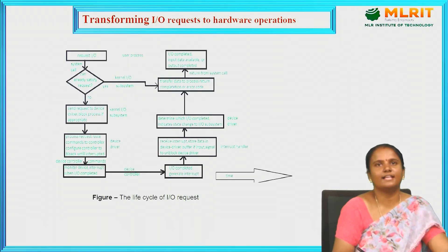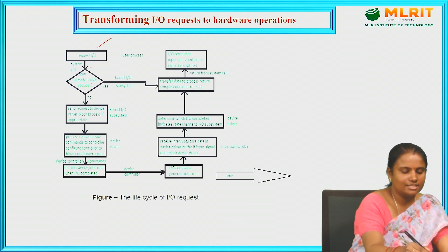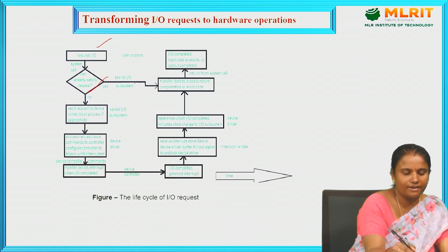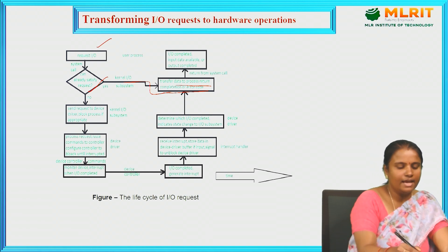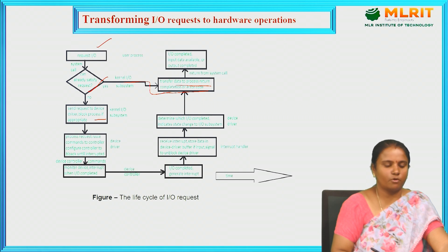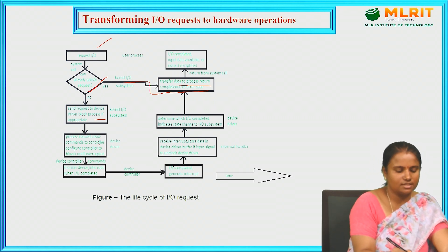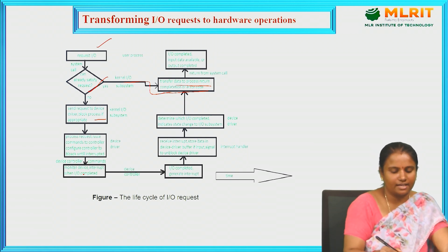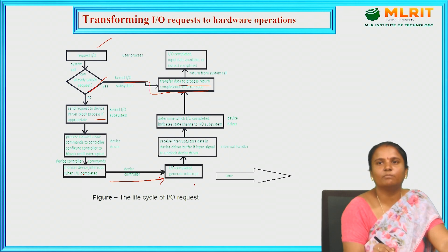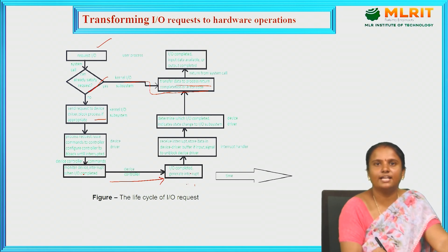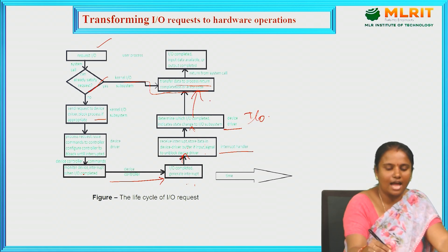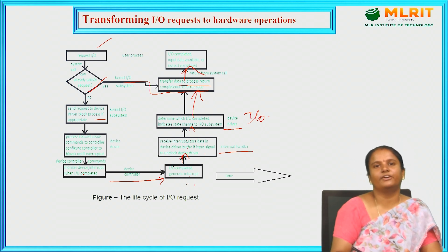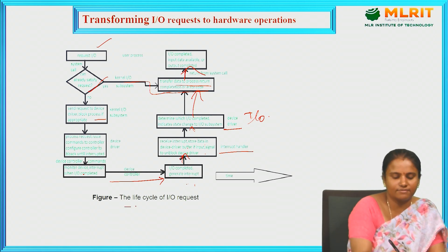This is how we transform an input-output request. The input-output system call checks if the request can already be satisfied. If yes, it goes to the kernel and transfers data to the process, completing with an error code if needed. If no, it sends the request to the device driver or blocks the process if appropriate. Next, it processes the request and monitors the device for any interrupts. Then it goes to the device controller where input operations are performed.